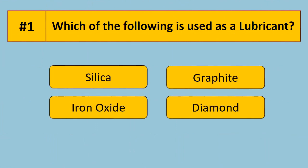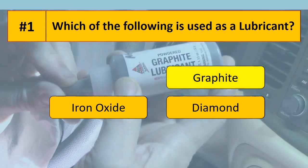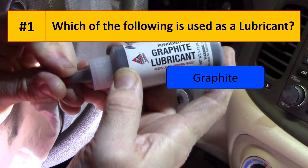Question 1. Which of the following is used as a lubricant? Graphite is used as a lubricant.